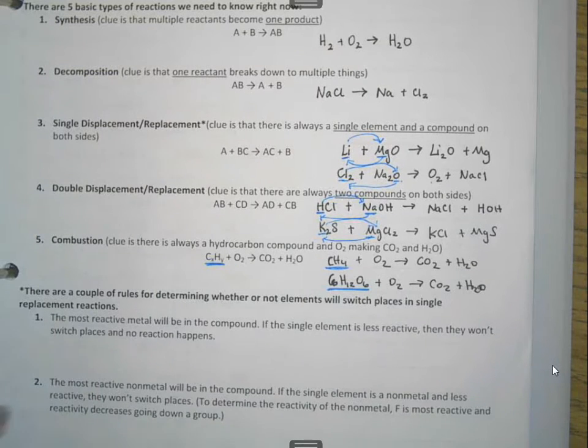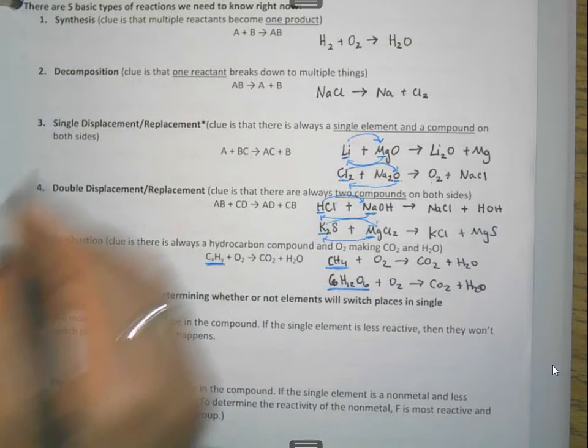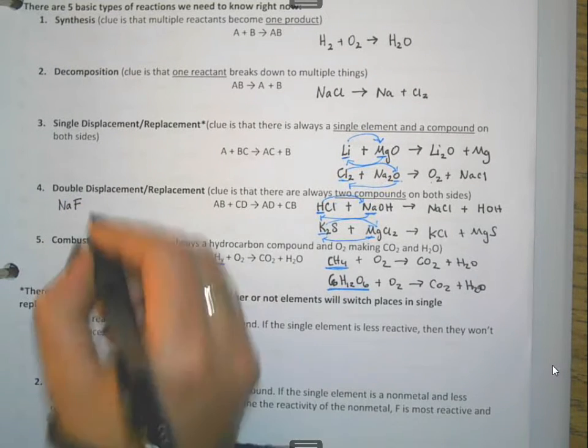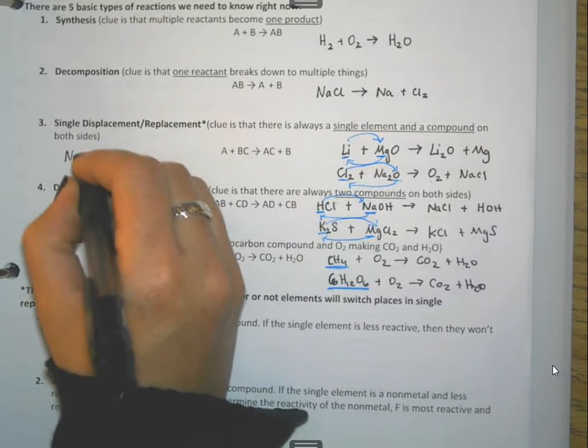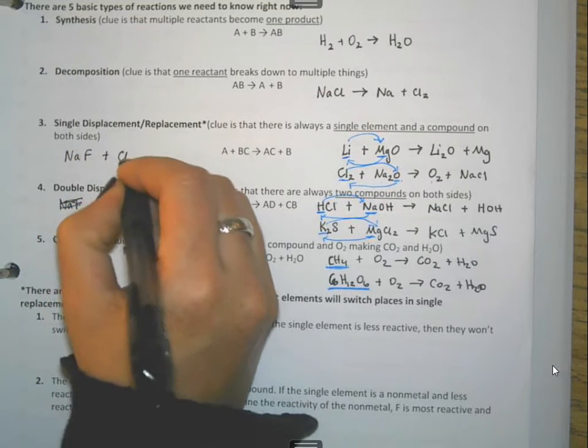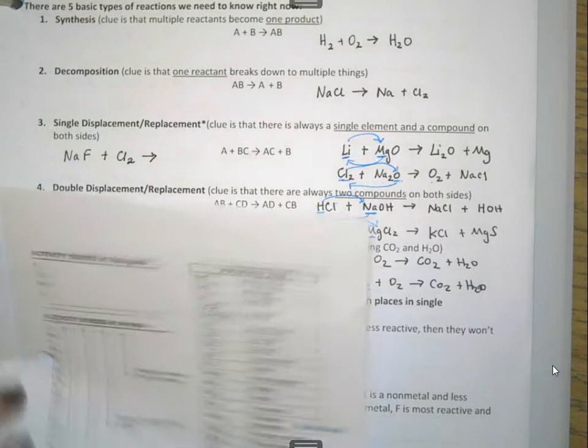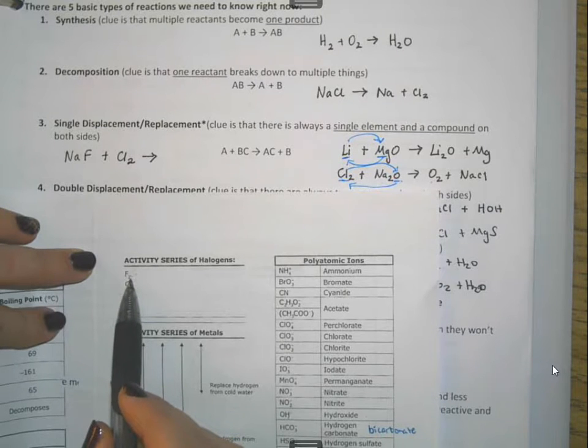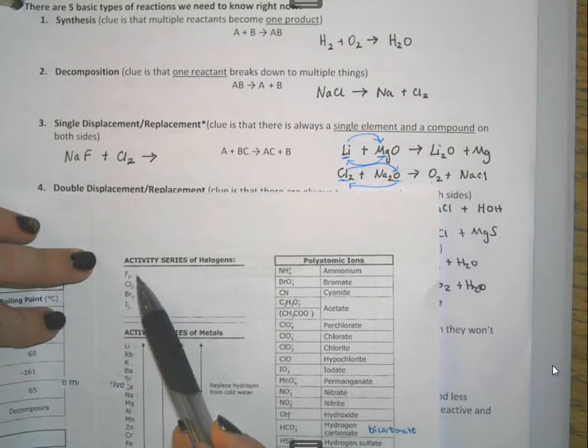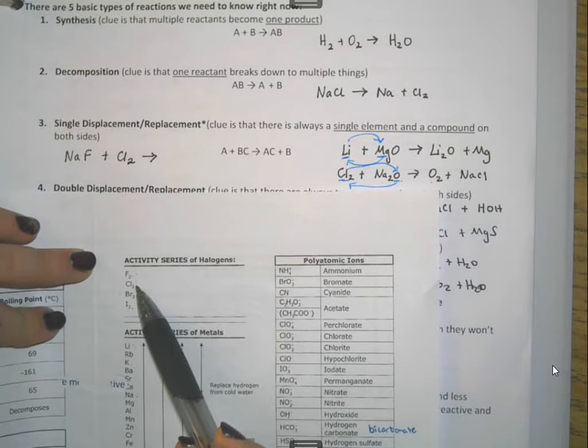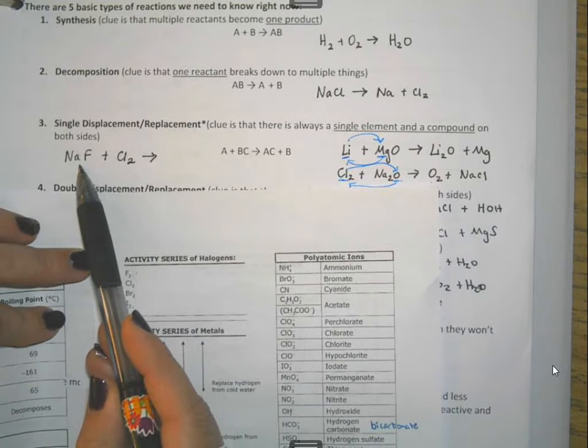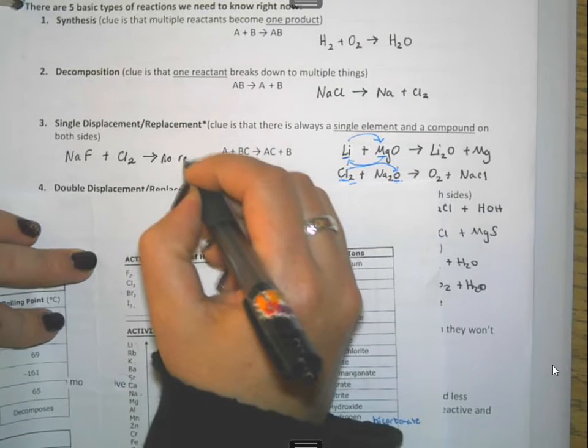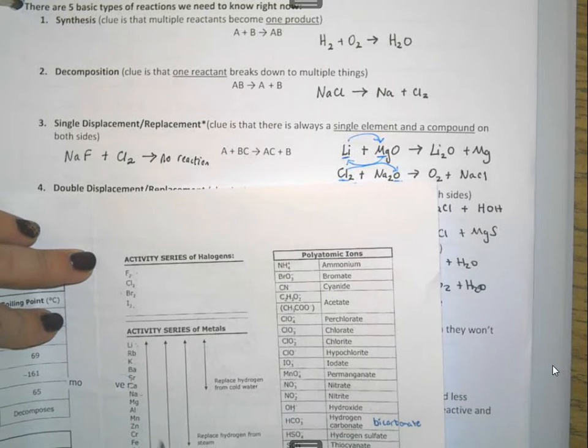If you happen to see one that is a double replacement, for example, if I had sodium fluoride and we added chlorine to it, and I look at my activity series. Okay, fluorine, sorry, that's near my plan, and there's class changing. I've got fluorine is more reactive than chlorine. What that means is fluorine wins the compound. Well, it's already in it. It's already got the compound. So what we would end up with this one is simply no reaction. It just doesn't happen. It won't take place.